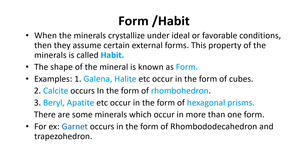Coming to another property — form or habit. This is a very important diagnostic property. When minerals crystallize under favorable or ideal conditions, they assume a certain external form, and this property is known as habit. Examples: galena and halite occur in the form of cubes, calcite occurs as rhombohedra, beryl and apatite occur as hexagonal prisms. Some minerals exist in more than one form — for example, garnet occurs as rhombododecahedra and trapezohedra.